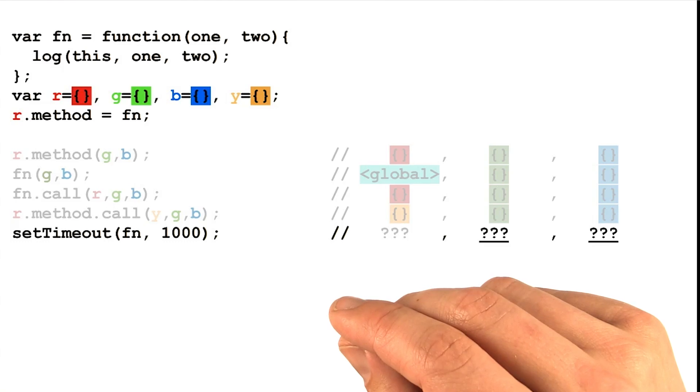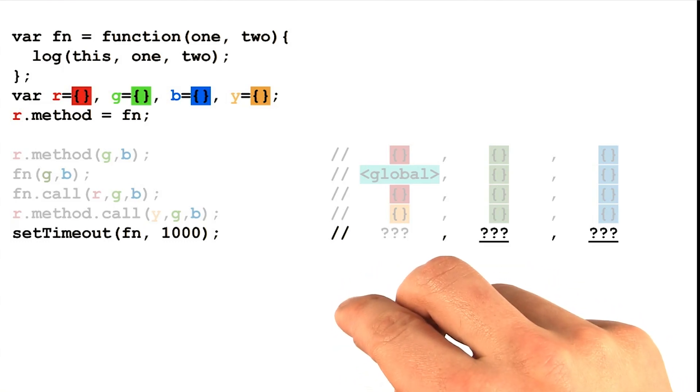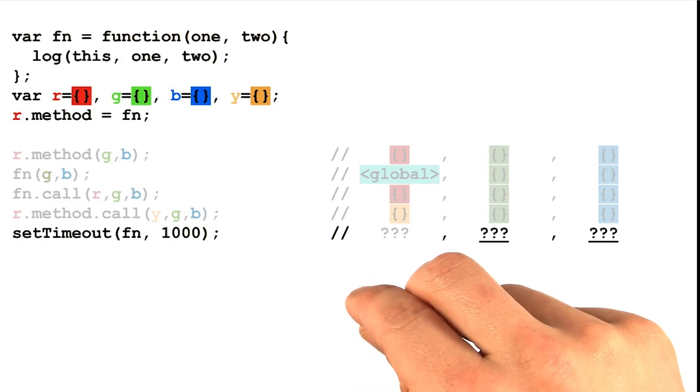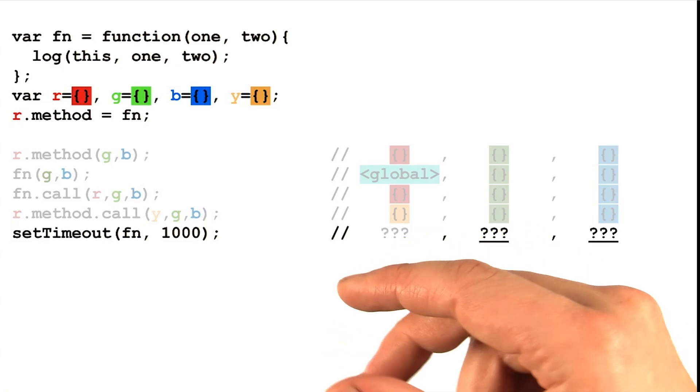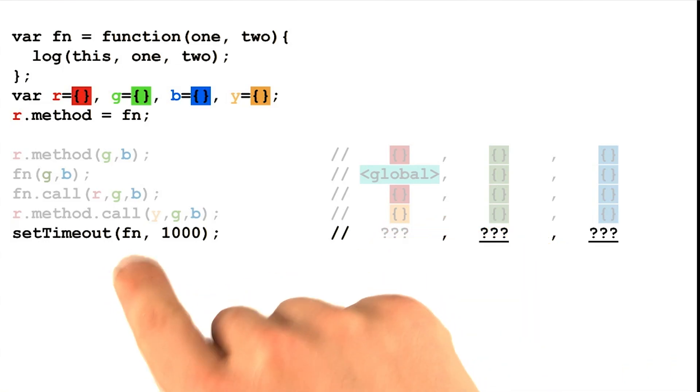Remember that you can't tell what value a function's parameter will be bound to until you look at the specific invocation of that function. So we'll need to go looking for the invocation of the fn function.